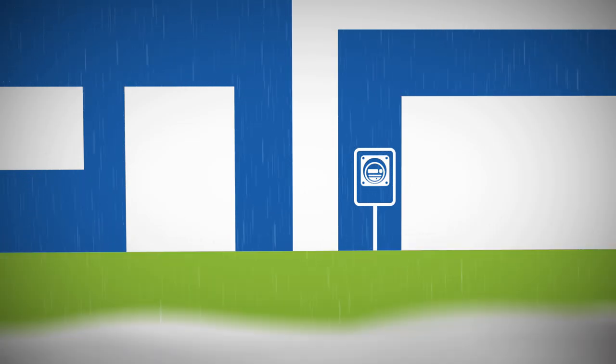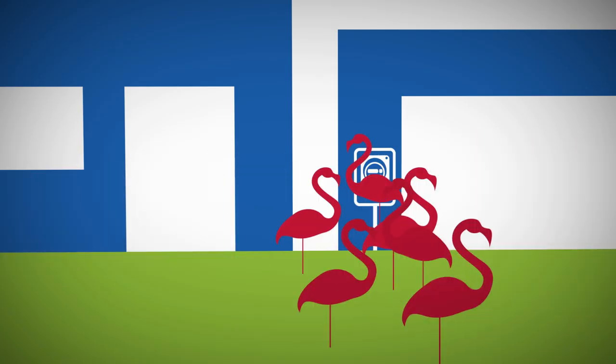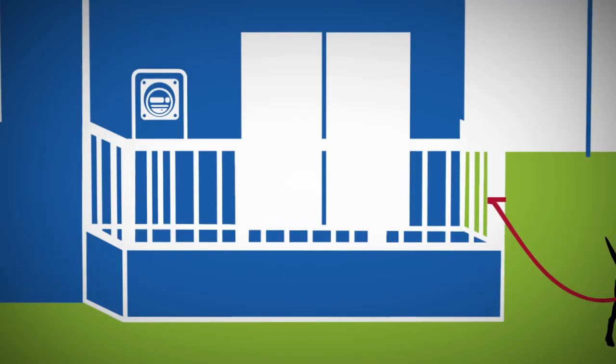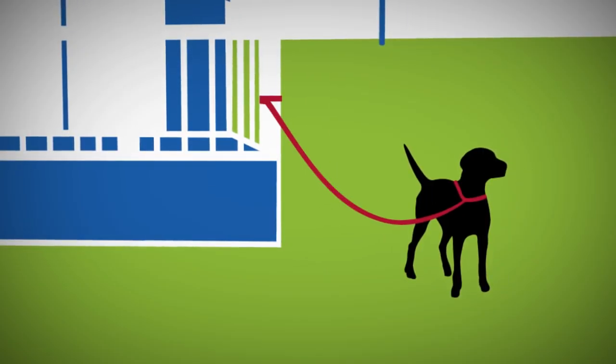Obstructions such as snow, bushes, lawn decorations, storage bins, decks, and animals, both leashed and unleashed.